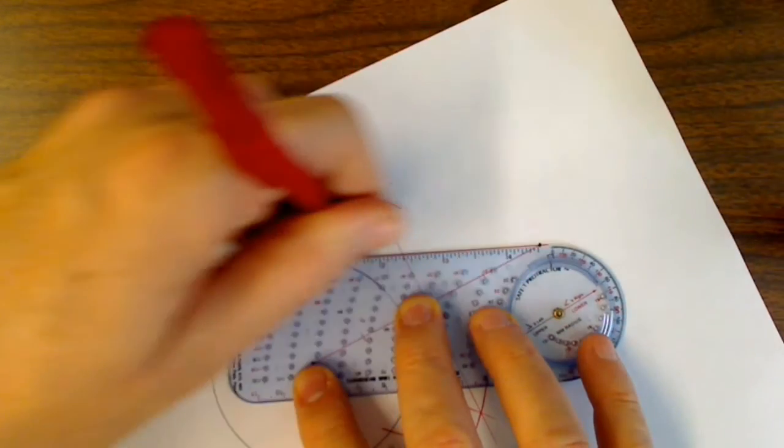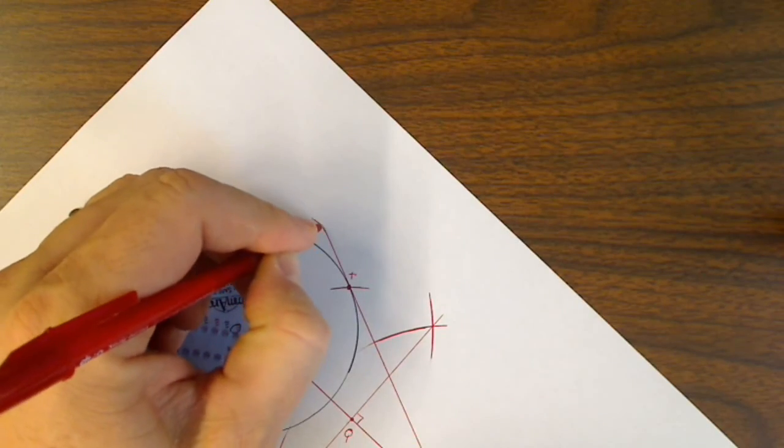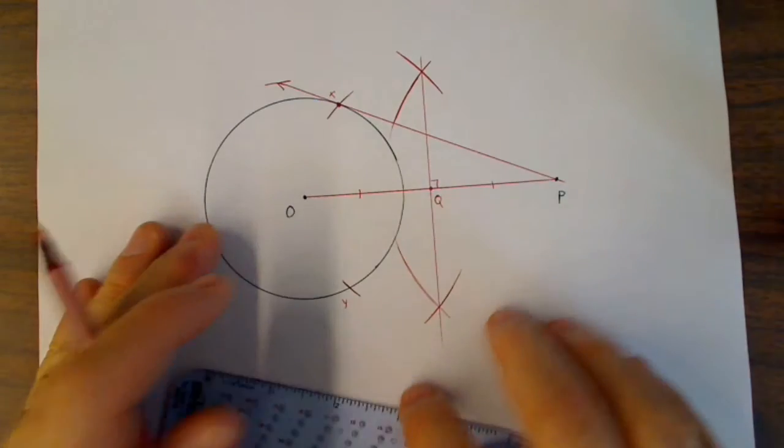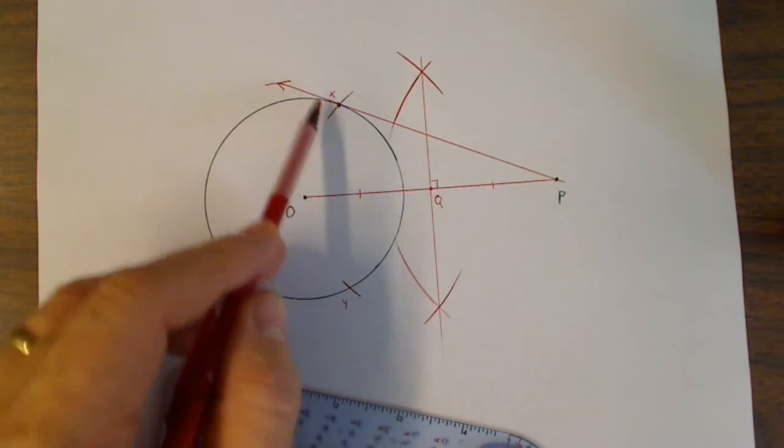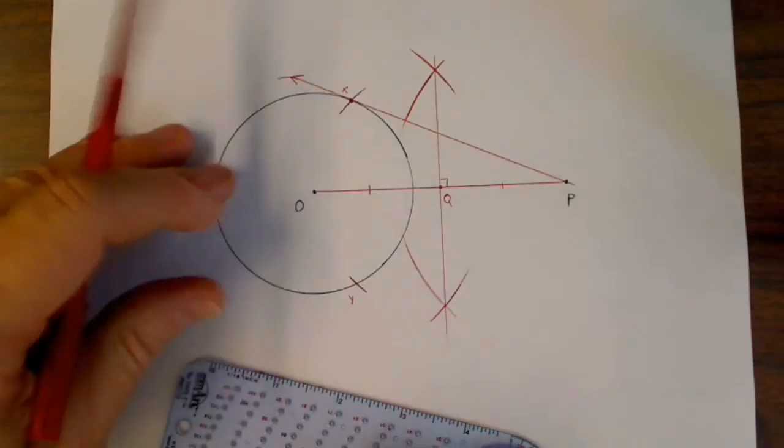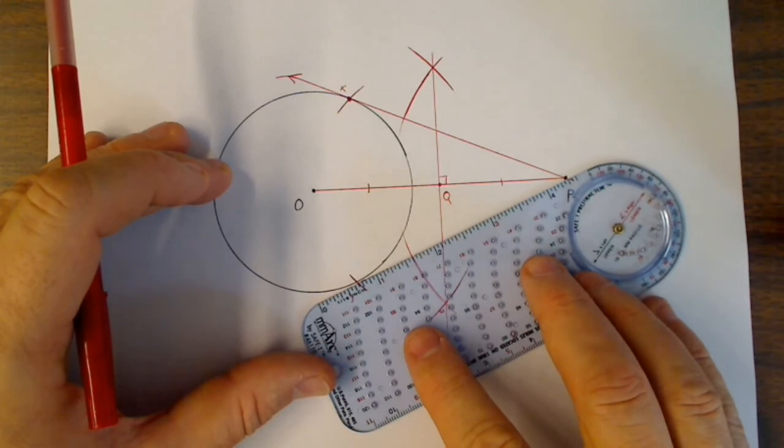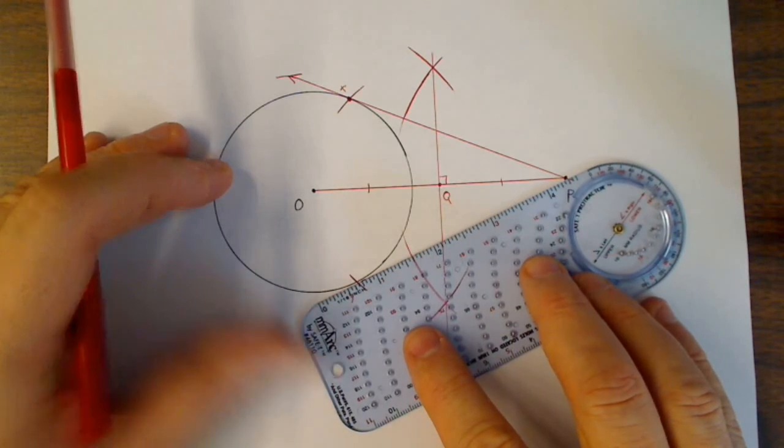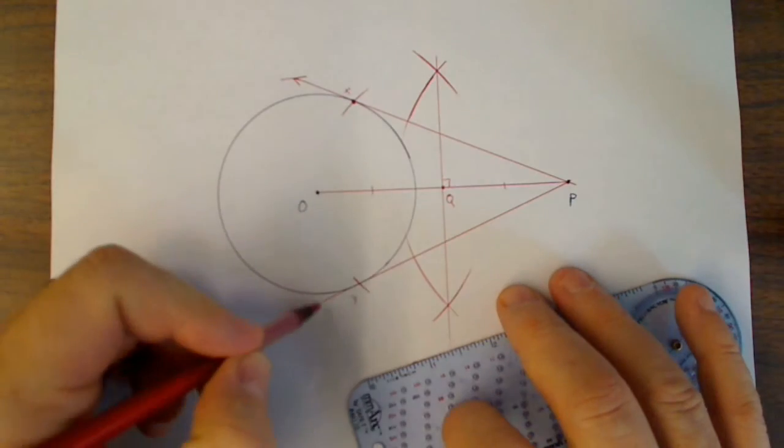So I draw the line. That was kind of a funny thing to have happen. And you can see that the line that goes through P and X is tangent to the circle. If I chose to make the tangent down below, then I would use point Y. And you can see that that line is also tangent.